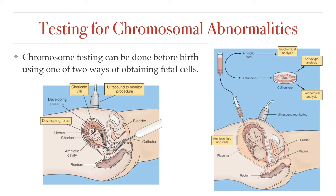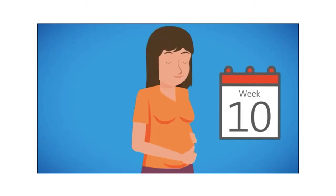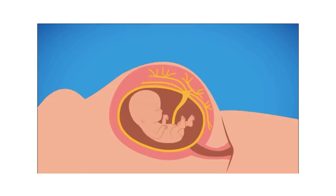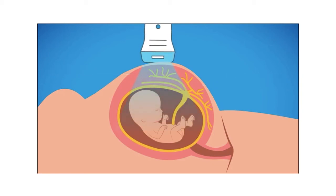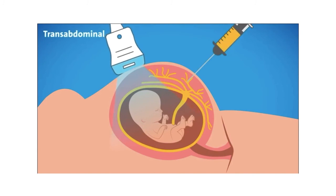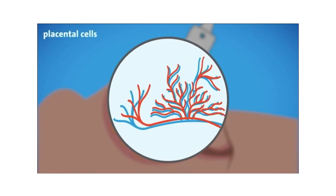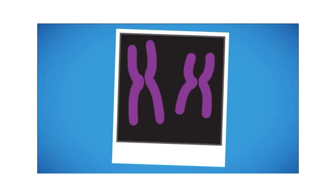Let's talk about how chromosomal abnormalities are detected prenatally — that is, before birth. One way is through a process called CVS, or chorionic villus sampling, which can be done between the 10th and 13th week of fetal development. The procedure involves obtaining cells, or chorionic villi, from the placenta, because placental cells are genetically identical to the baby's cells. A sample is obtained under ultrasound guidance, either using a needle or a slender plastic catheter inserted through the cervix. The cells are then analyzed and a karyotype is produced. However, the procedure is not without risk — one in every 500 cases of CVS results in a miscarriage.